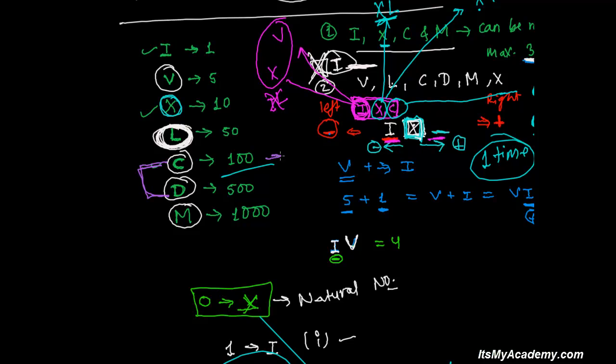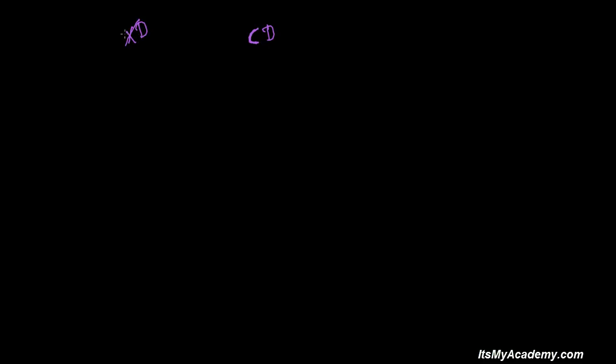We're going to discuss between these two numbers. C represents 100 and D represents 500. The main rule: before 500, you can put only C. Keep in mind, before 500 you cannot put X, you cannot put I, you cannot put V, you cannot put L — you cannot put other things except C.